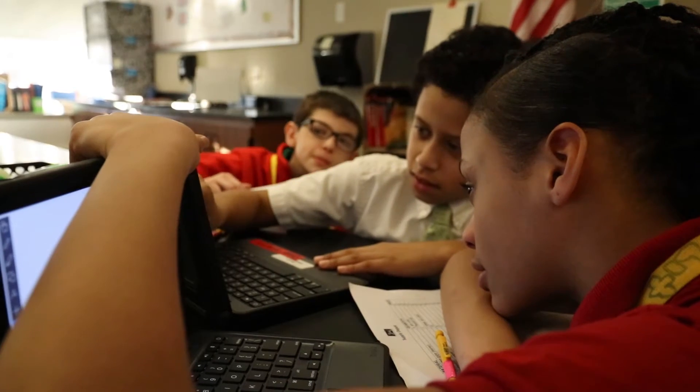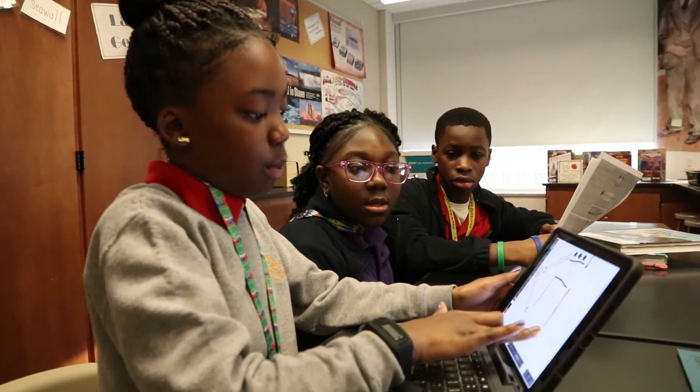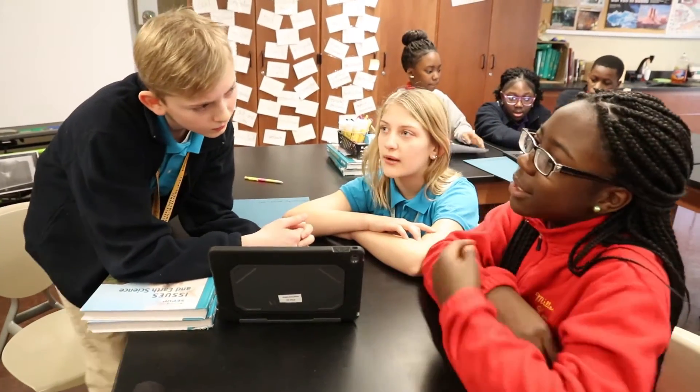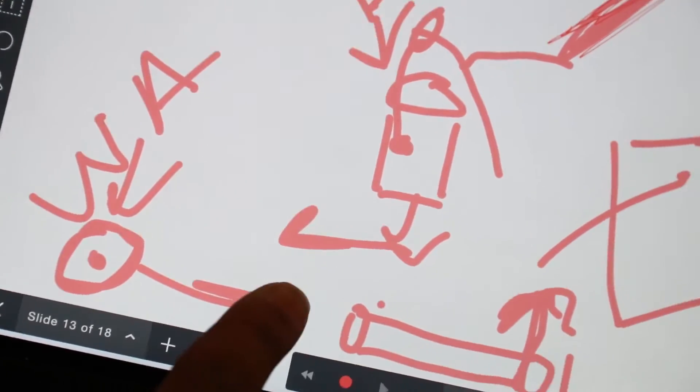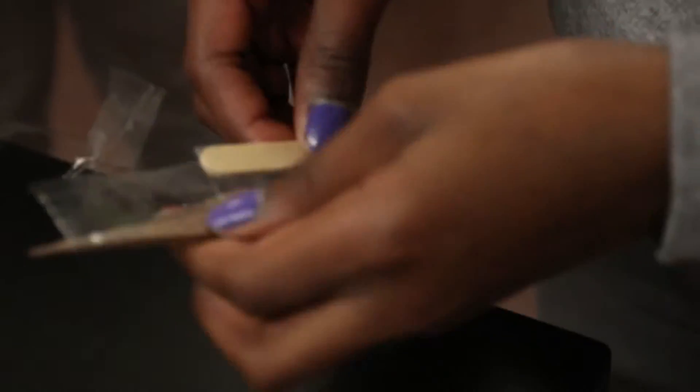The teams have to choose a problem from City of Ember to solve. We're making a machine that waters plants. We're trying to figure out a way to distribute food to the people of Ember. They have to create a Rube Goldberg machine using various simple machines.